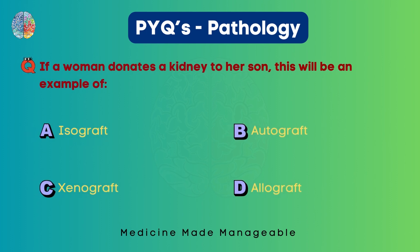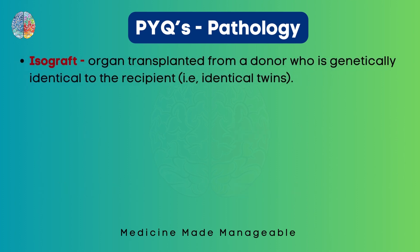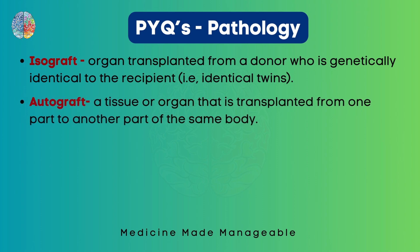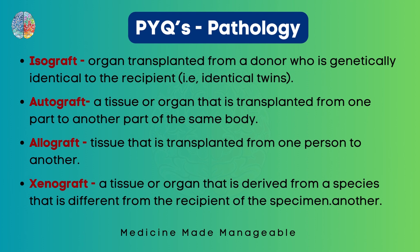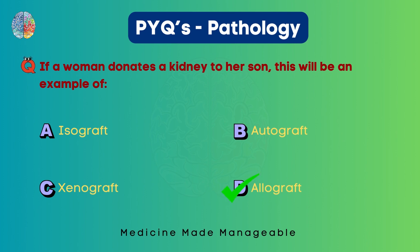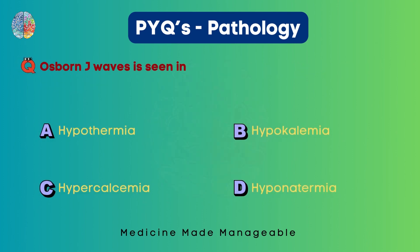If a woman donates a kidney to her son, this is an example of isograft, autograft, xenograft, or allograft. Key definitions: isograft — transplant between genetically identical individuals such as identical twins; autograft — tissue transplanted from one part to another part of the same body; allograft — tissue transplanted from one person to another person; xenograft — organ or tissue transferred between different species. The correct answer is option D, allograft.